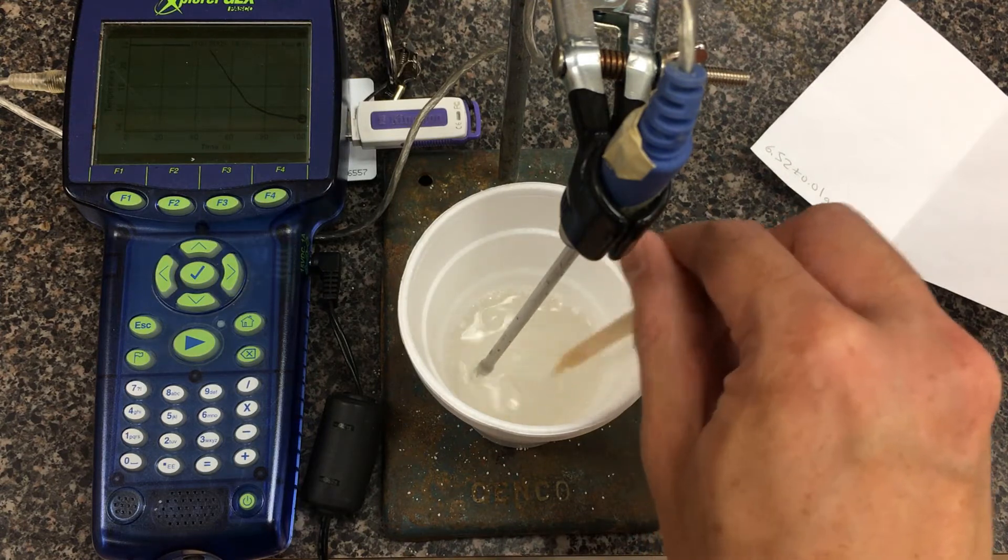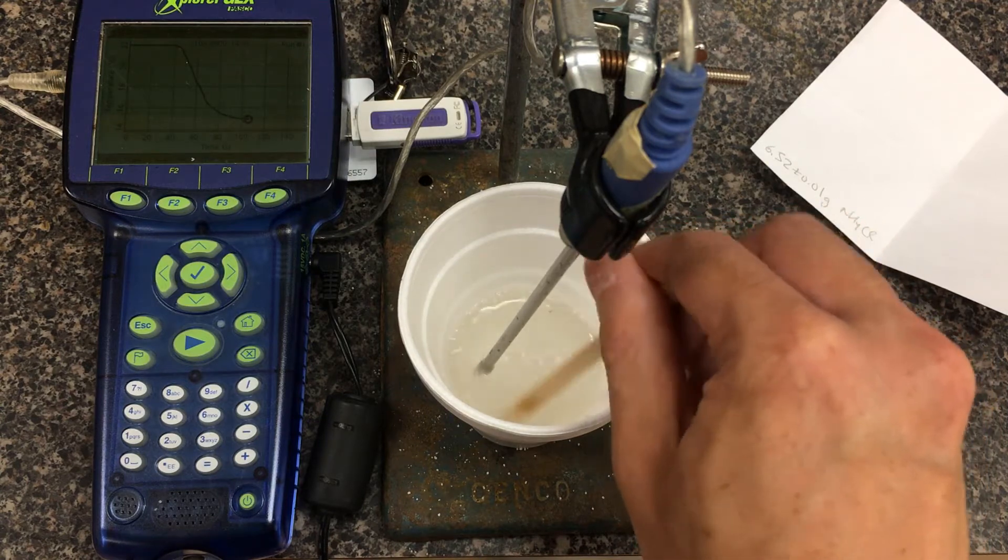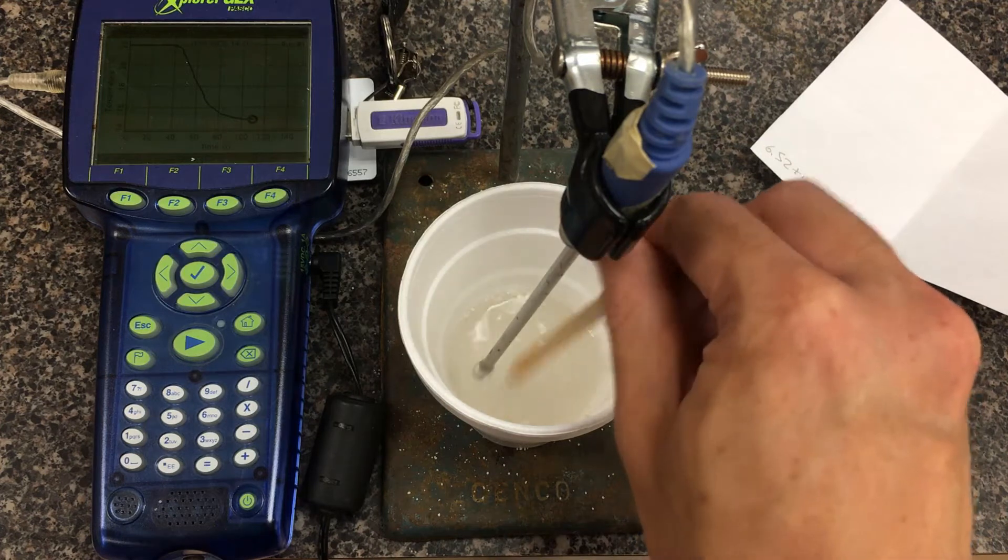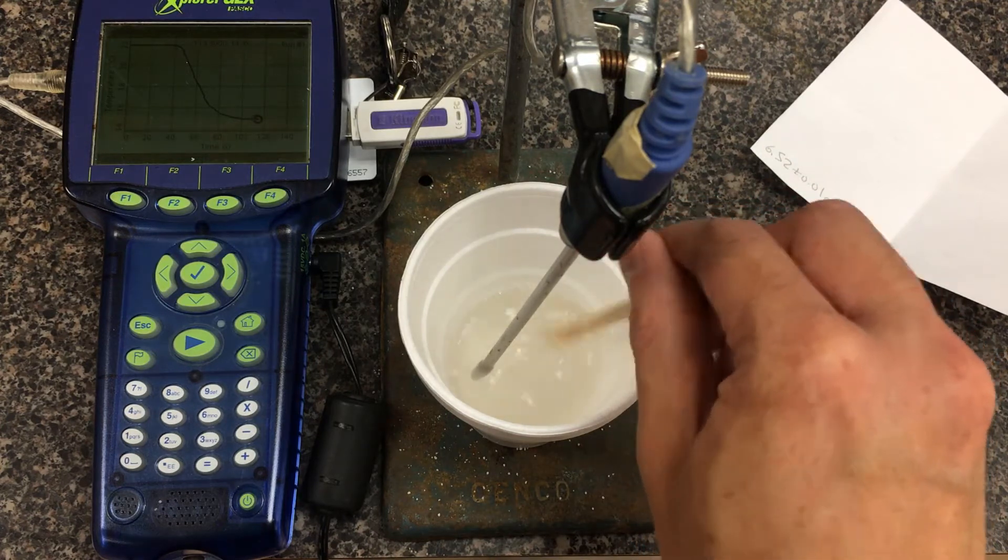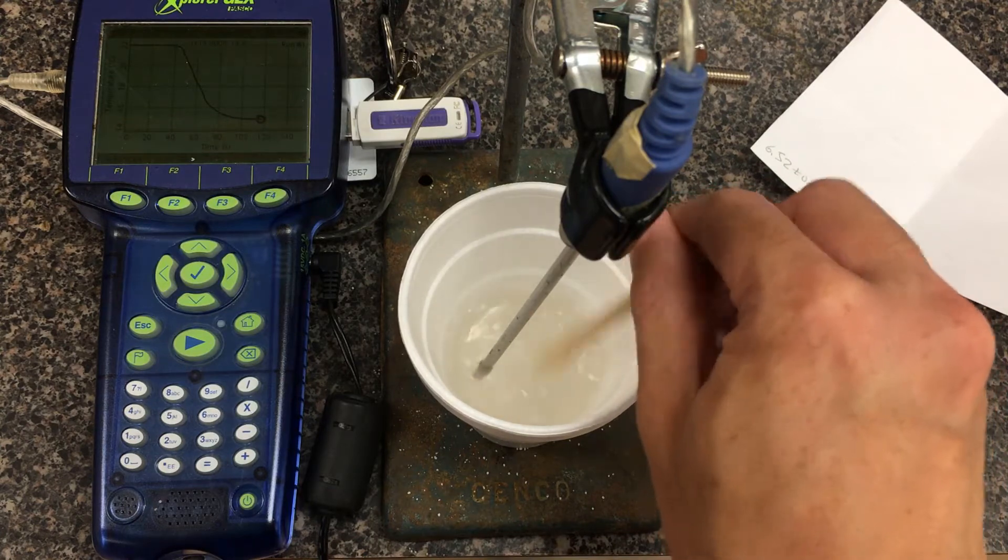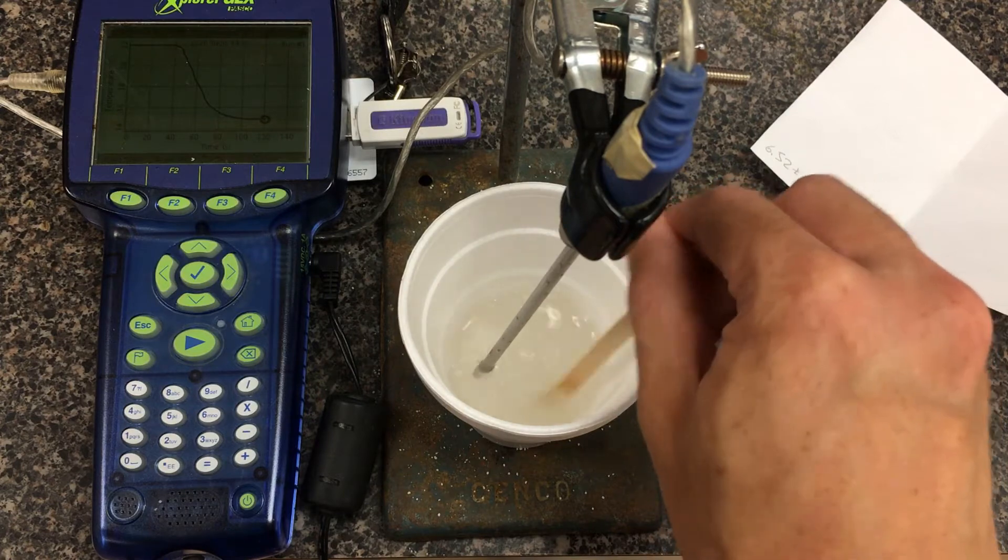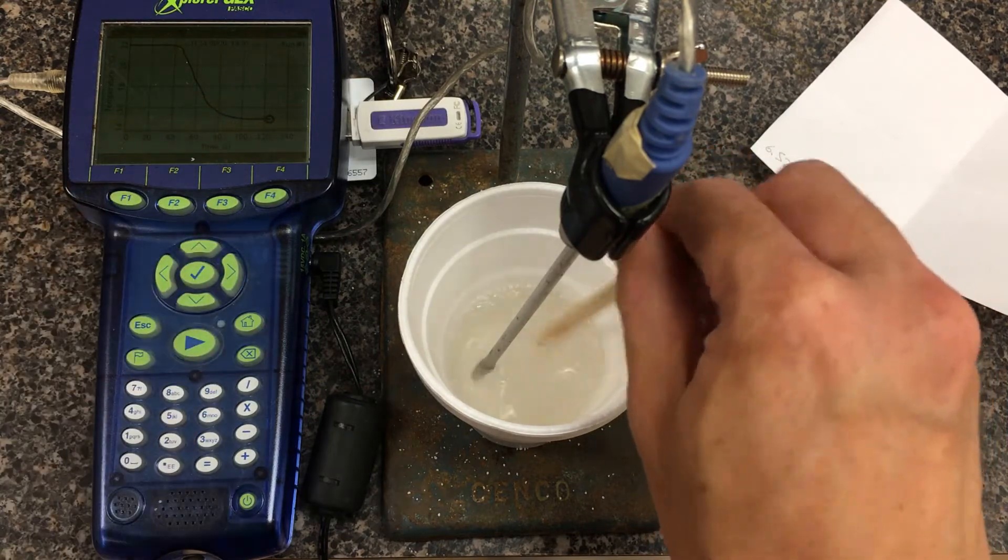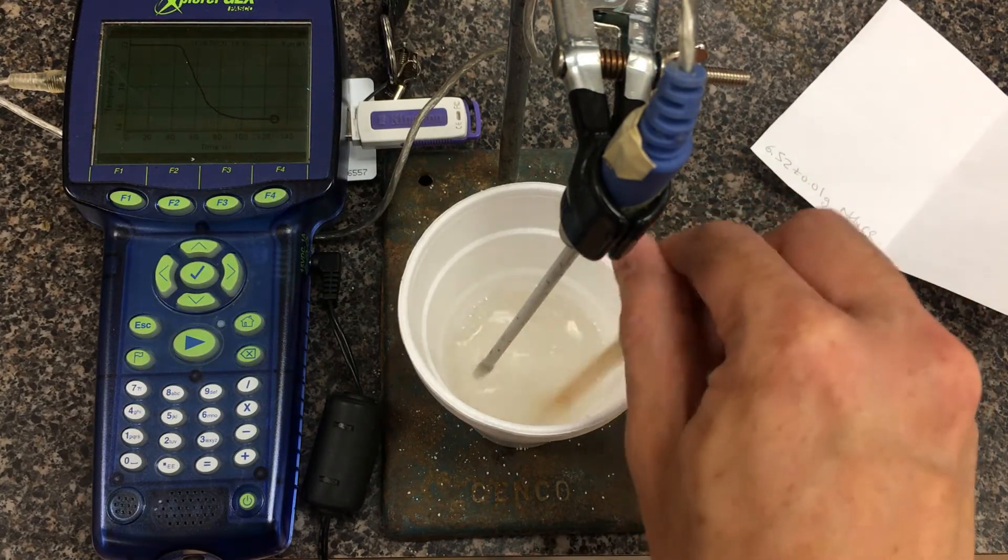Remember for a calorimetry experiment, the biggest source of error is heat loss to the surroundings. Even though we've used a styrofoam cup and a wooden stir stick instead of a glass stir stick, one major error would be not having a lid on top of the styrofoam cup. We're going to let it steady out to get a sense of it trying to equilibrate back to room temperature. That slope is what we need to do the extrapolation later.